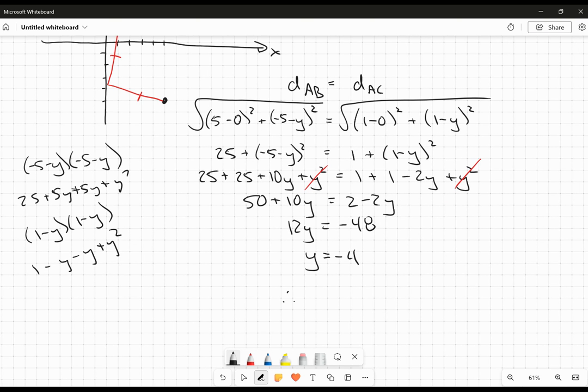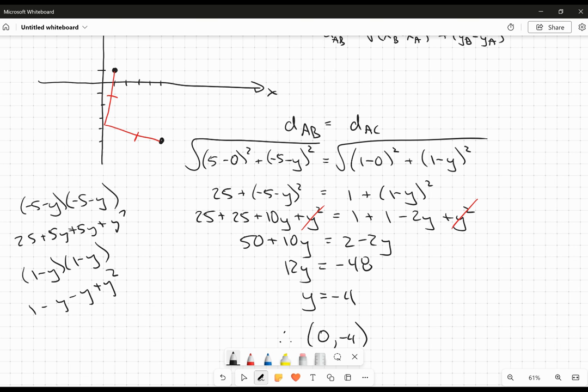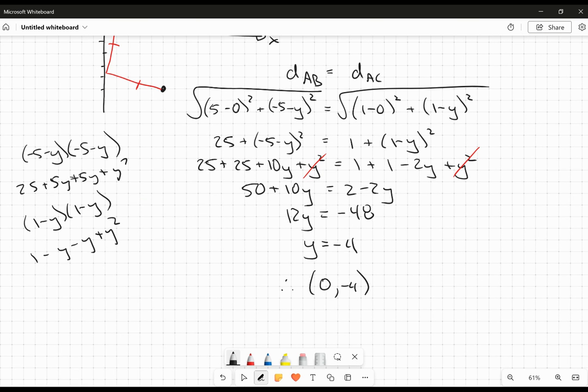So, therefore, I know that the point that I'm looking for is the point 0, negative 4. And I actually, when I drew it out there, I was close. I didn't know if it was going to be exactly negative 4 or not at that point. I was just kind of guessing there based on the way my graph looked. So, I was pretty close. Anyway, that is the answer we're looking for.